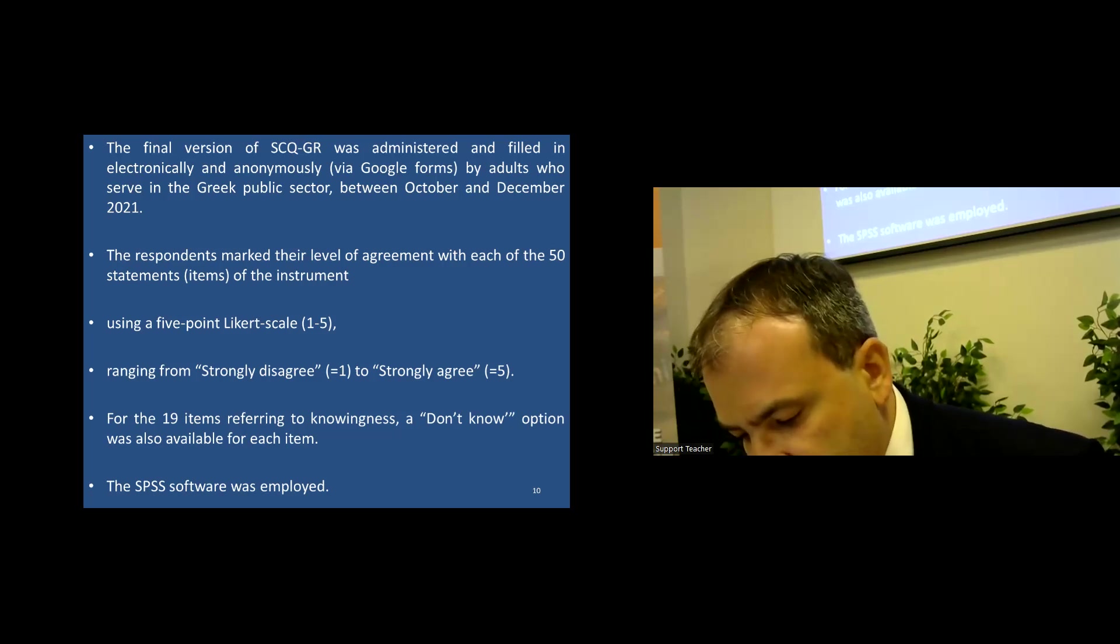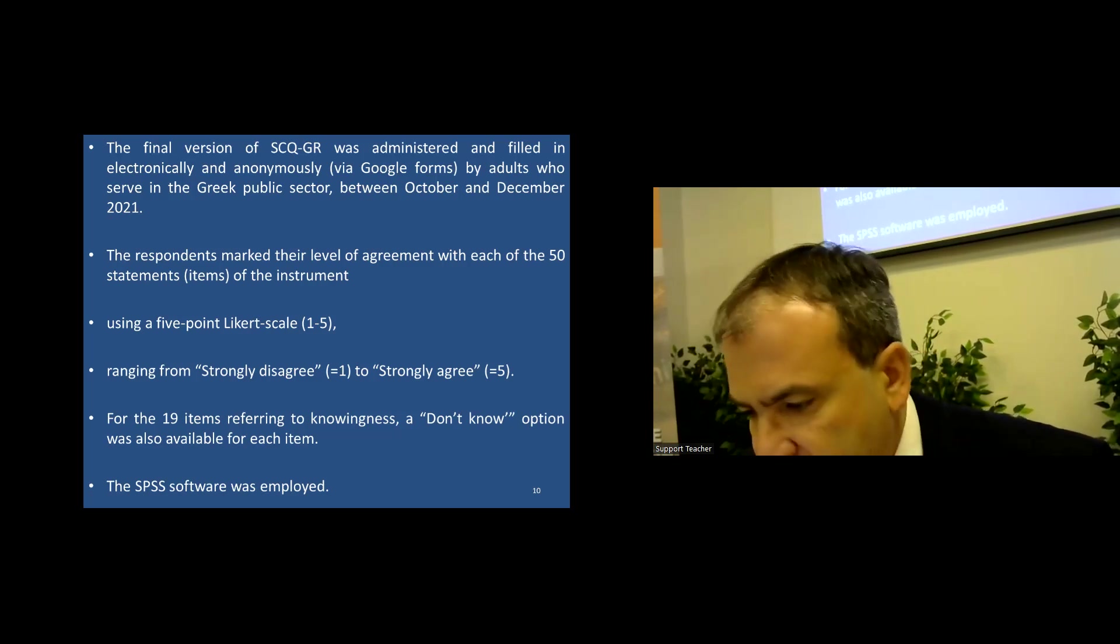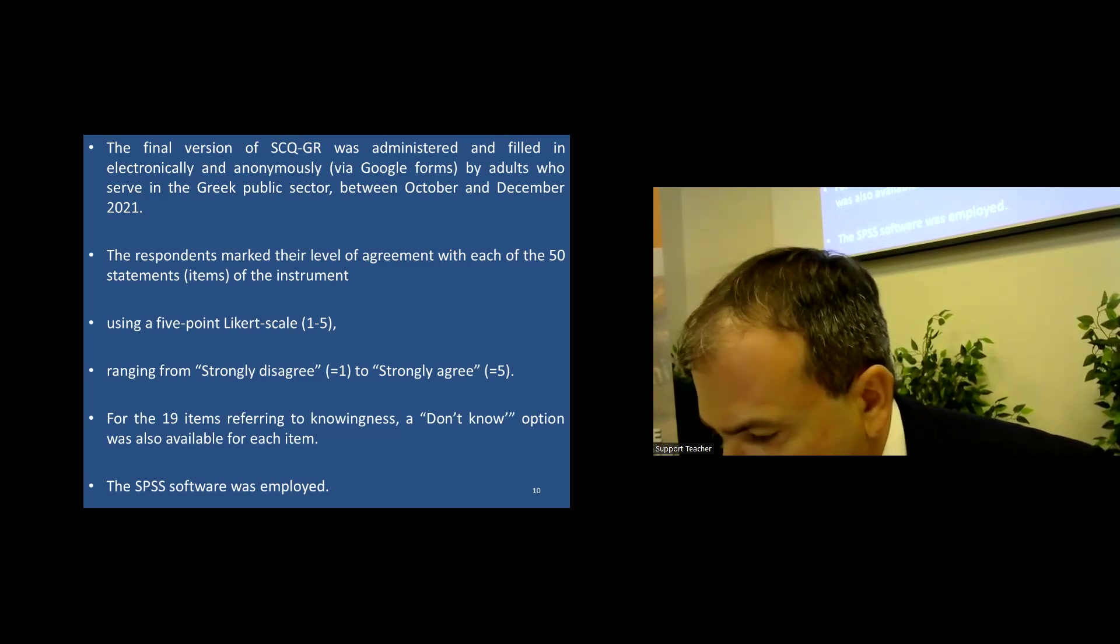The exploratory factor analysis, EFA, via the principal components method and varimax rotation with Kaiser normalization was conducted in order to examine the factors that exist among the 50 items of the Greek questionnaire. The SPSS software was also employed.